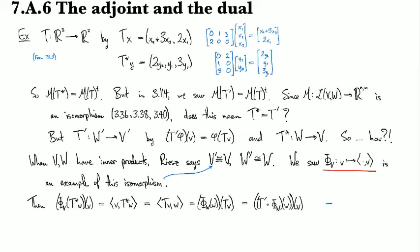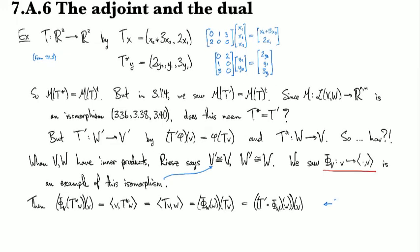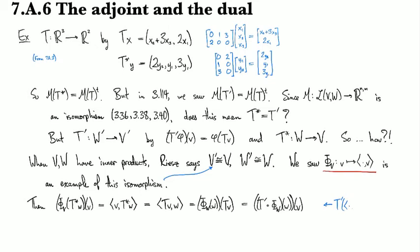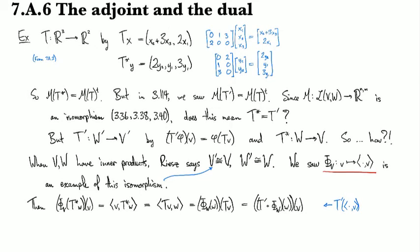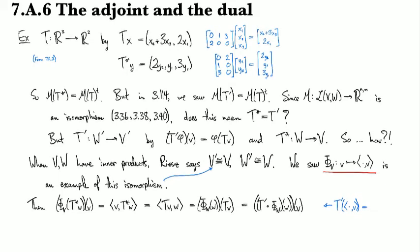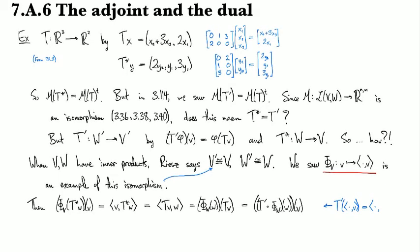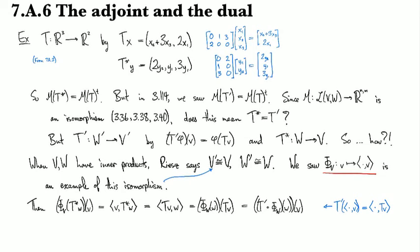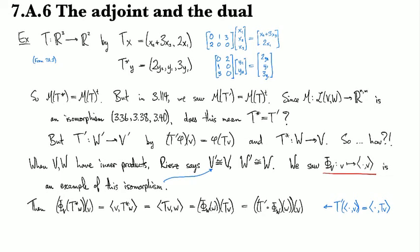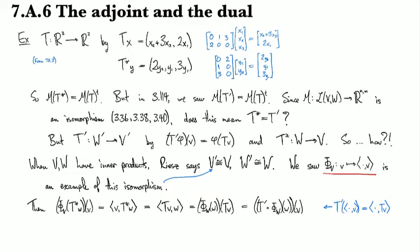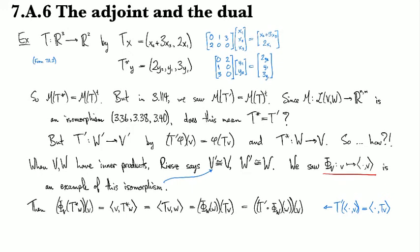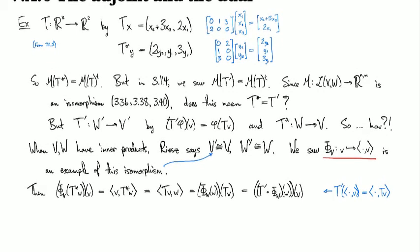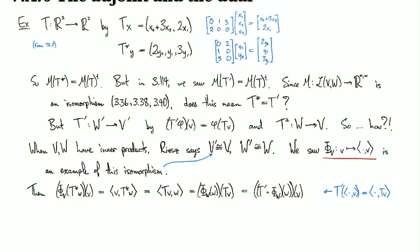But maybe this helps. For this last part right here, think about how t prime of, and then here's the functional that we're interested in. This is the functional applied to precomposing with t. So that's what the dual map looks like in the case when the functional in question is inner product against the dude.